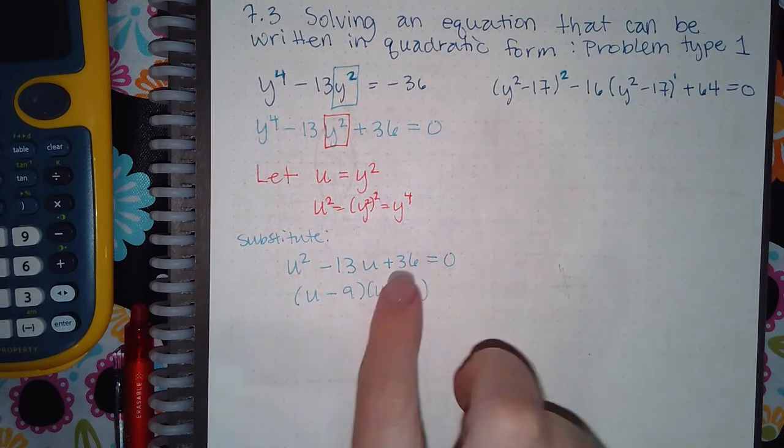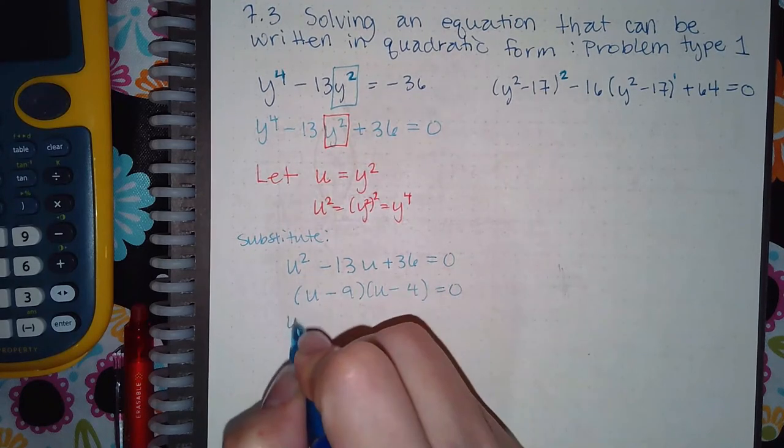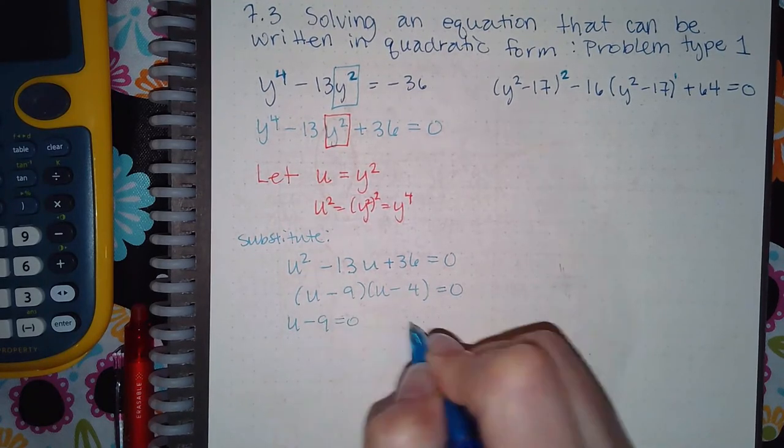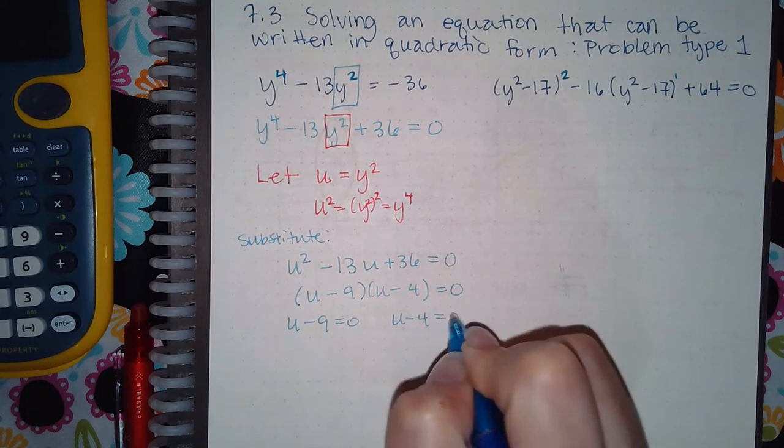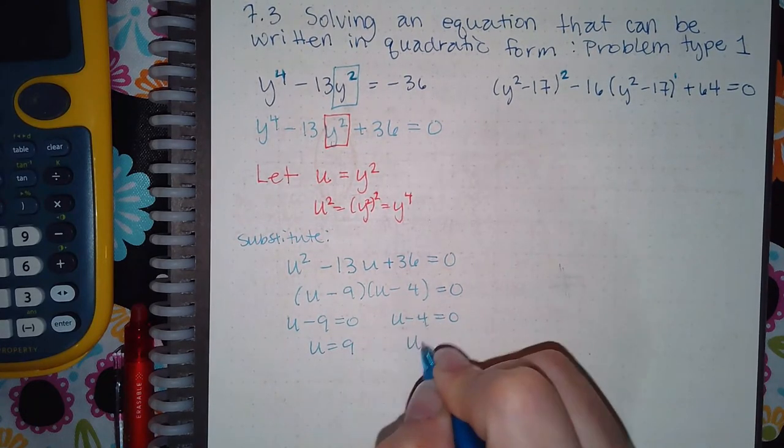So here I can use u minus 9, and u minus 4. If I multiply those, I get positive 36. If I combine them, I get negative 13. So I get u minus 9 equal to 0, u minus 4 equal to 0. If I add 9, I get u equal to 9, and u equal to 4.